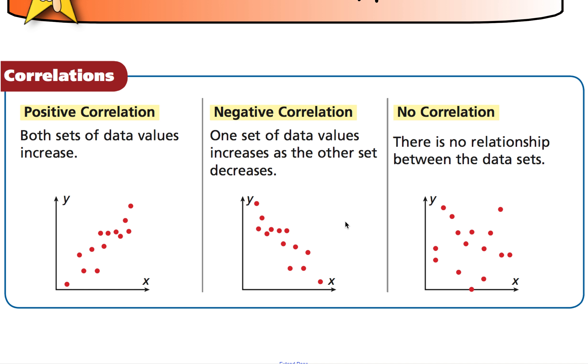So we want to be able to describe the correlation between the variables. So here we have TV watching and test scores. So what kind of a relationship does it look like here? As you watch more TV, your test scores seem to go down. So as one is increasing, the other is decreasing. So that looks to me like it is a negative correlation.